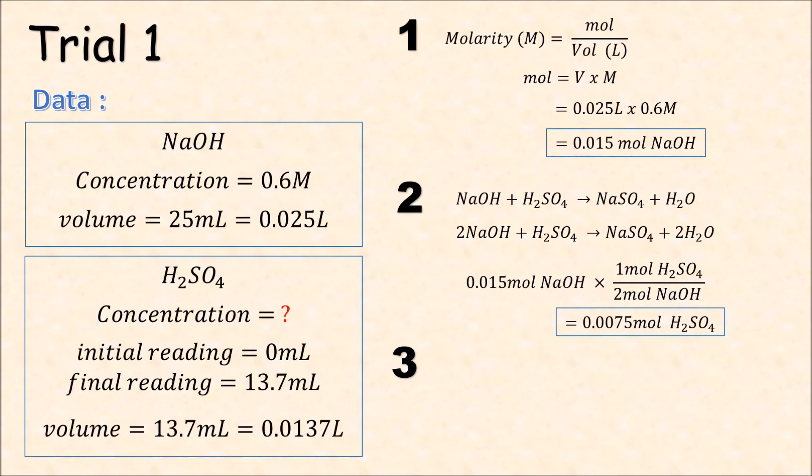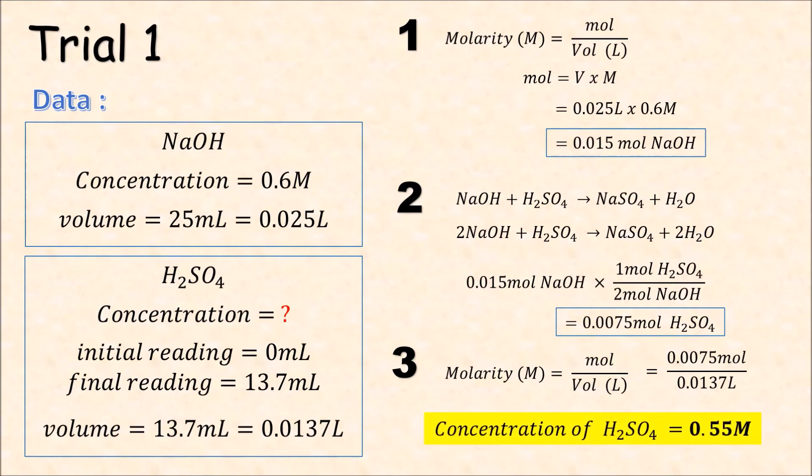After that, now we get the mol of the sulfuric acid. We can compute for the molarity of the sulfuric acid. So we have 0.0075 mol divided by 0.0137 liter, which gives us the concentration of 0.55 molar.